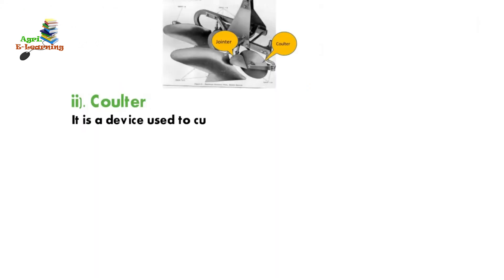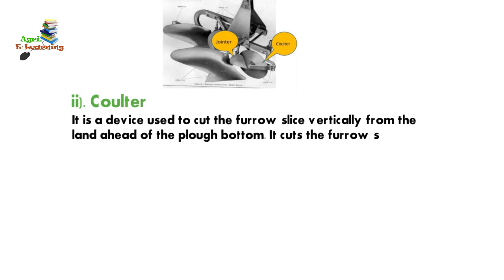Colter: it is a device used to cut the furrow slice vertically from the land ahead of the plow bottom.